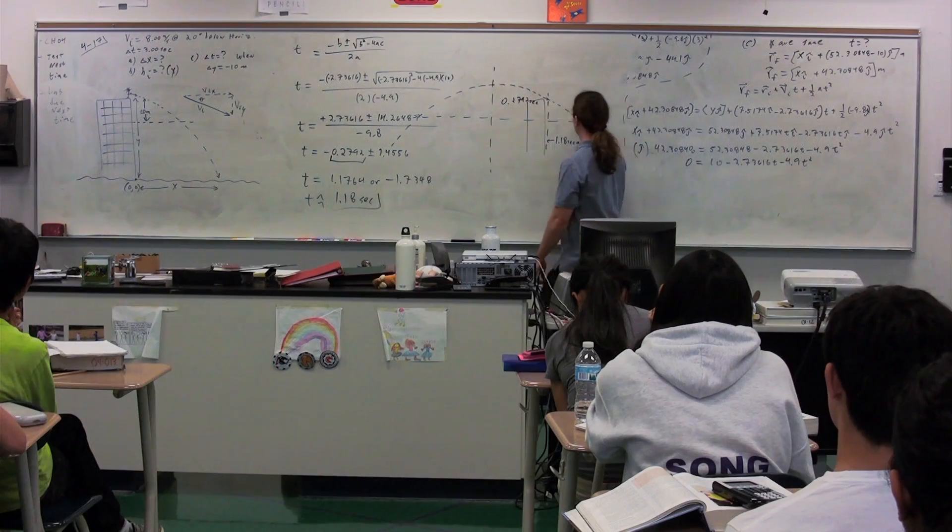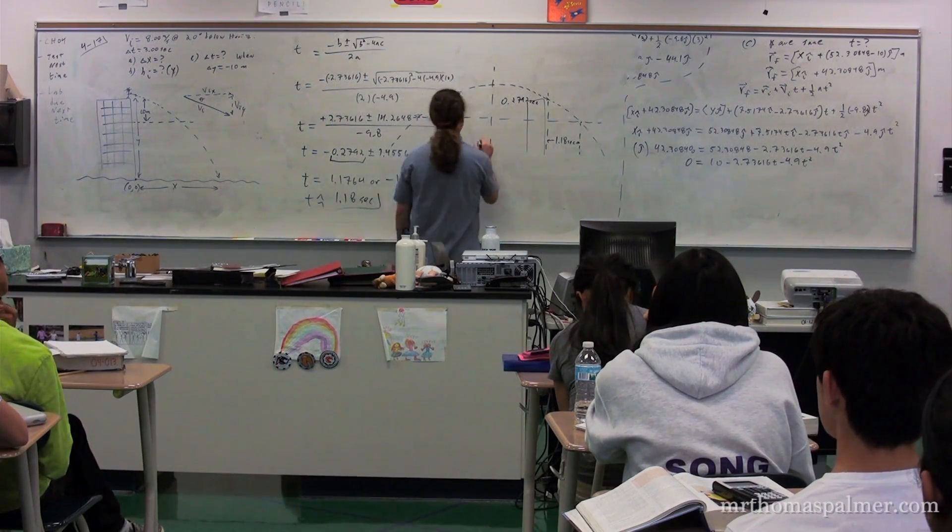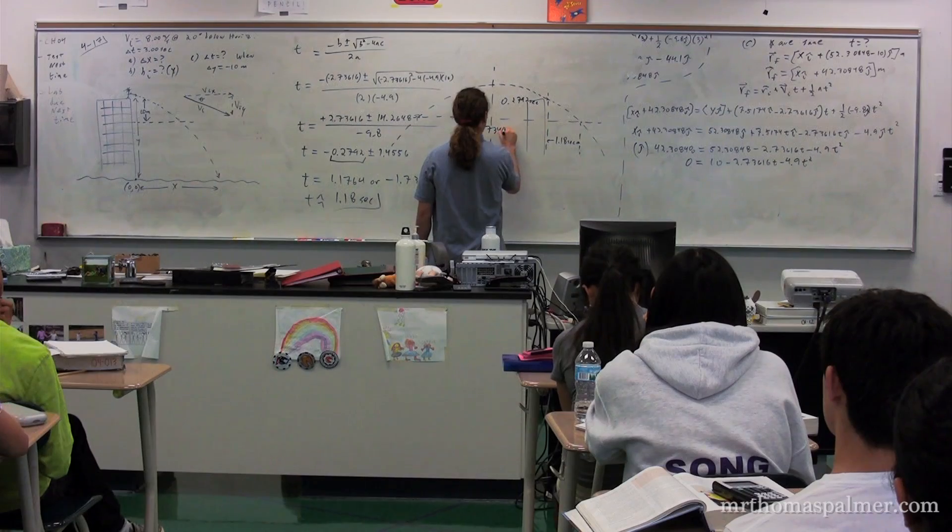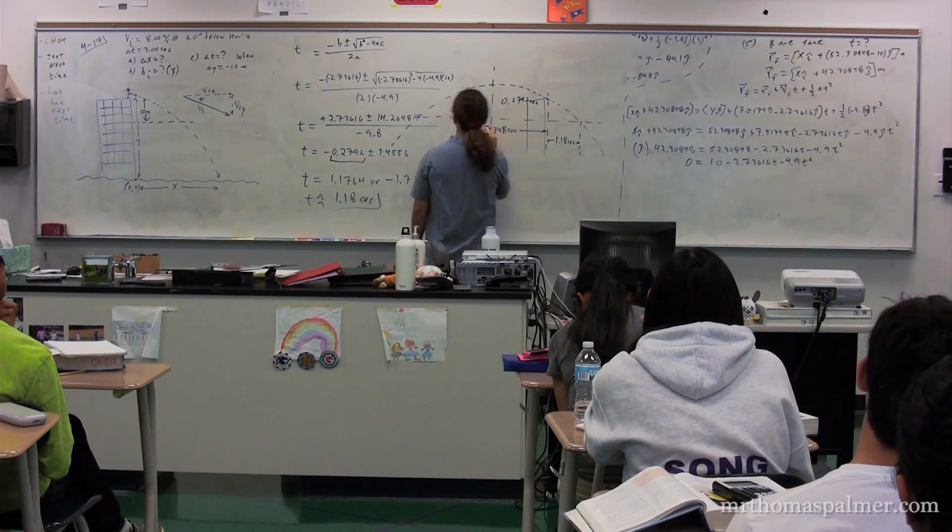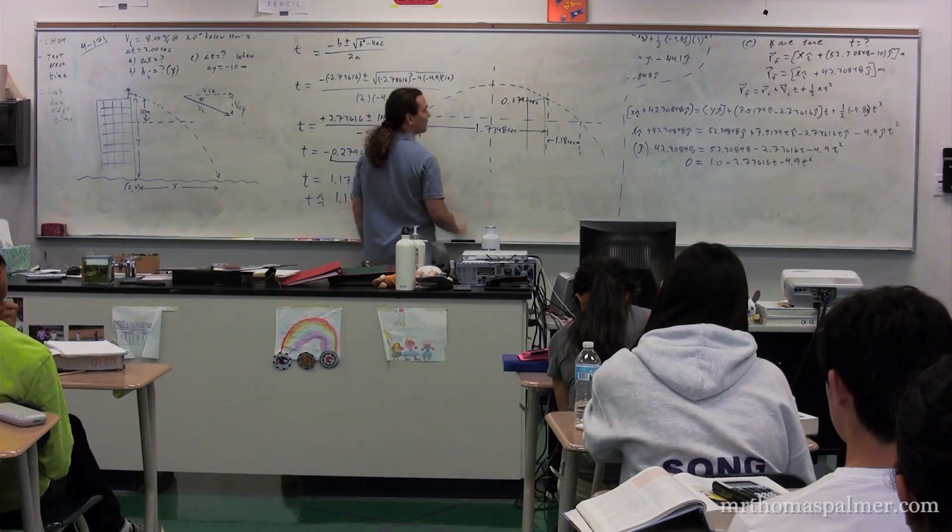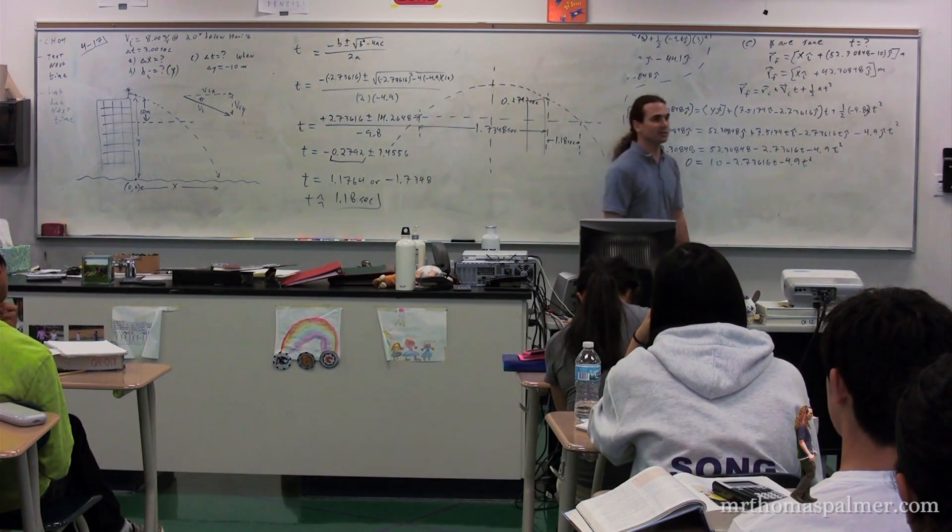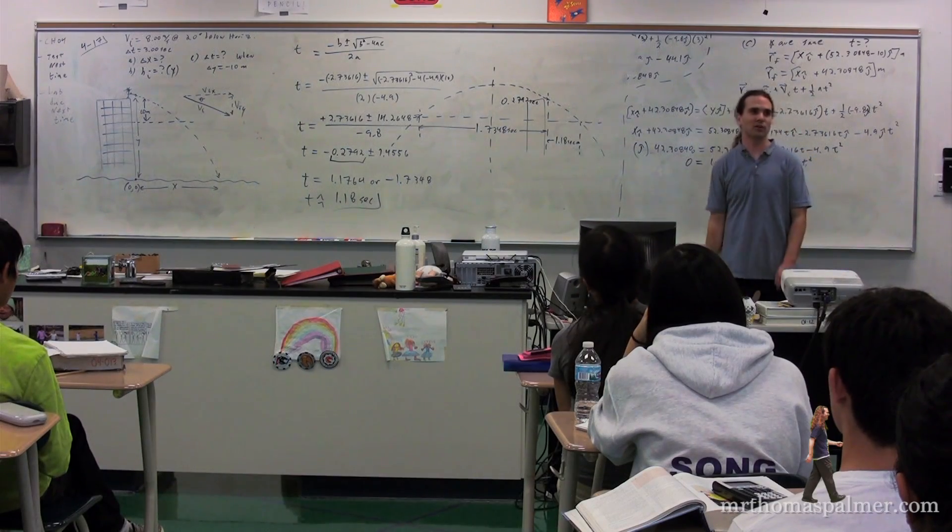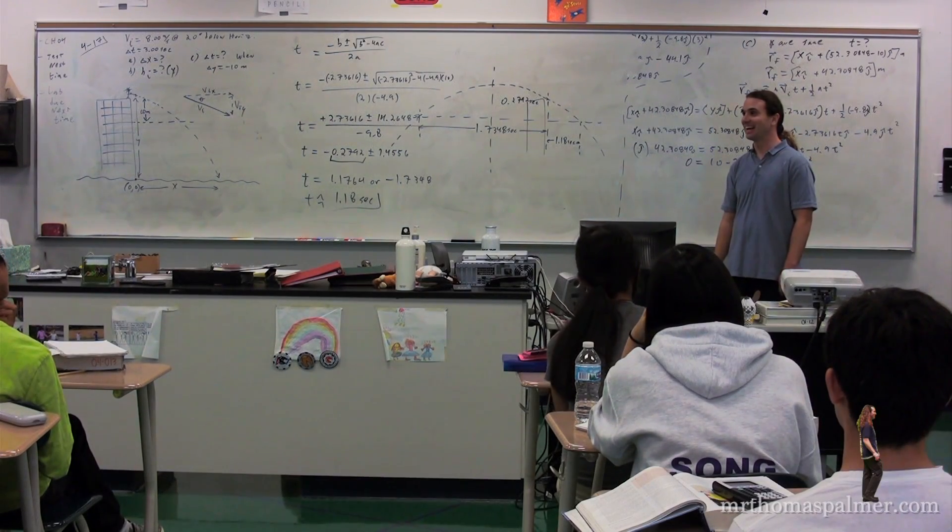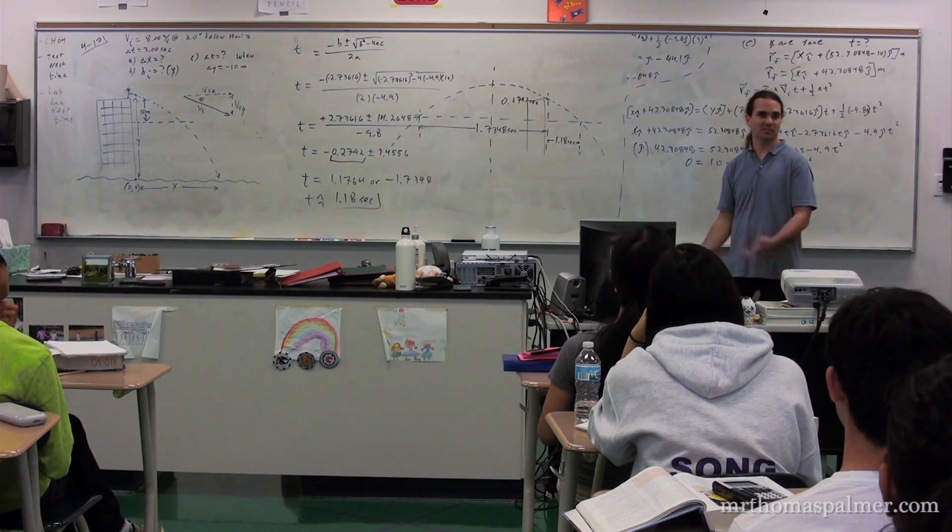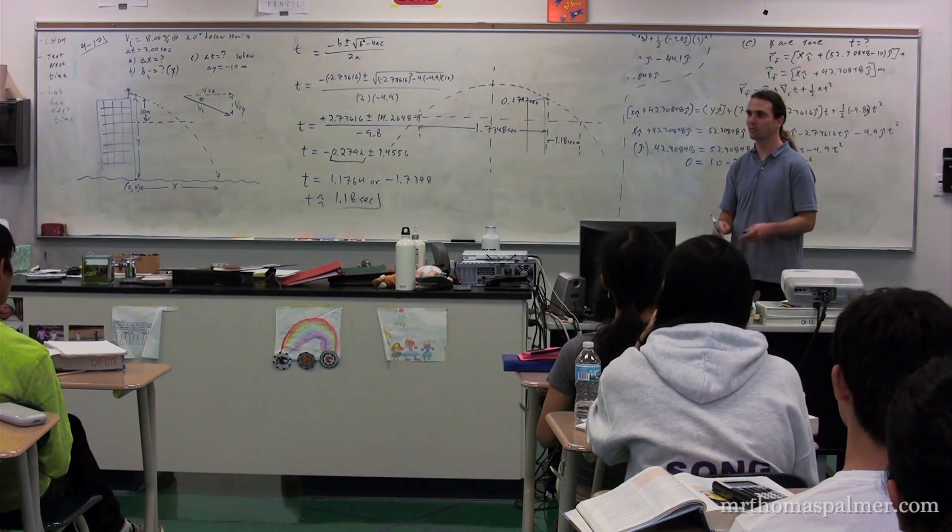And it would reach this same level, it would have come from this same level, 1.7348 seconds ago. So there's actually a whole bunch of information in this quadratic formula. You'd usually ignore it because who goes back in time? Well, we do. Because we just turn time around when we talk about going backwards in time. It's just the same thing. It's just that the formulas are the same.